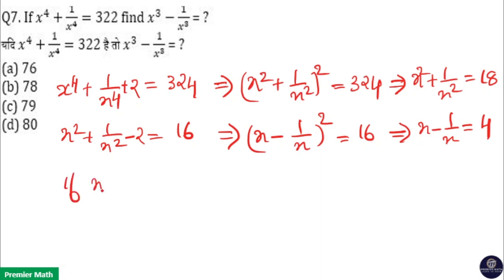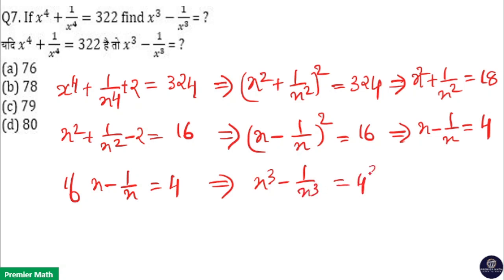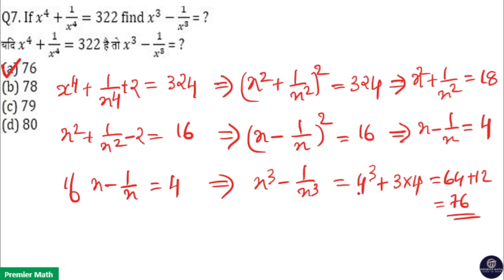If x minus 1 by x is 4, that implies x cubed minus 1 by x cubed is 4 cubed plus 3 into 4, which is equal to 64 plus 12, which is equal to 76. So option A is your answer. This is a short trick.